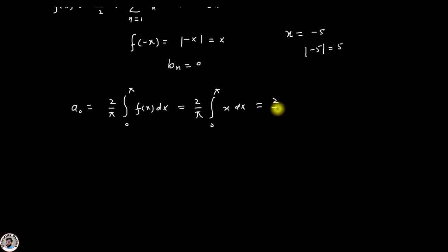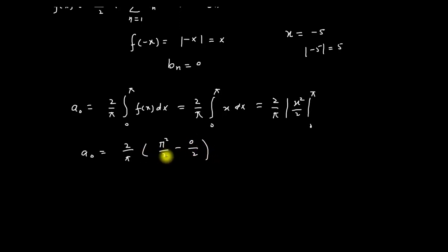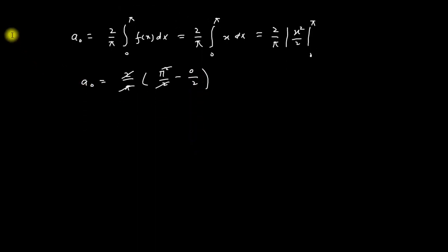After integration we get (2/π) × [x²/2] from 0 to π. The integration of x is x²/2. Putting the upper and lower limits: a₀ = (2/π) × (π²/2 - 0/2). The 2s cancel and π and the square cancel, giving us a₀ = π.